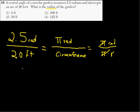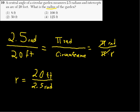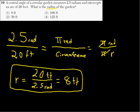Basically, we multiply both sides appropriately and we have radius equals 20 feet over 2.5 radians. Just to make sure units are right, we're multiplying by radians on both sides, so this turns out to be exactly 8 feet. So the radius is equal to 8 feet. We'll see you next in question number 11.